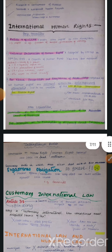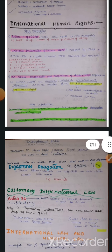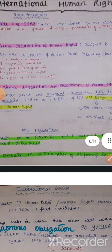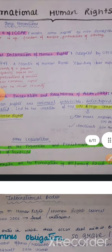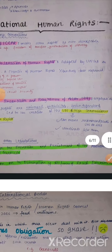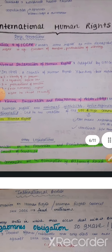Next, we come to international human rights. There are some important conventions about human rights. First, Article 4 of ICCPR — International Covenant on Civil and Political Rights — makes some rights non-derogable, meaning they are essential, isse koi chhoot nahin ho sakti. Jaise ki right to life, freedom of thought, prohibition of slavery — ye sab aise rights hain.